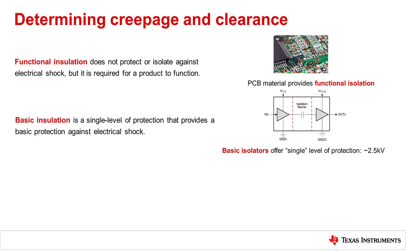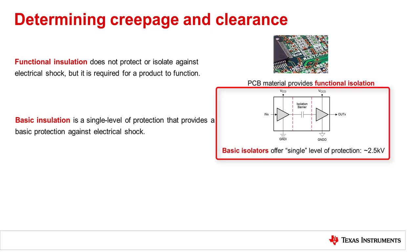Basic insulation is a single level of protection that provides basic protection against electrical shock. A very common example would be the plastic insulation of an electrical cord, which is a single level of protection from AC voltages. If the basic insulation fails, there is exposure to hazardous voltage. For integrated circuit isolators, the term basic isolator is used to describe isolation that acts as a single level of protection for voltages typically between 2.5 to 3 kV and occasionally as high as 5 kV.